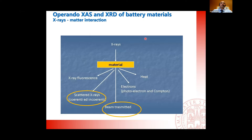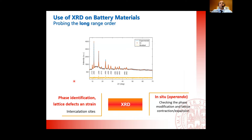This can be done using X-rays. By bombarding X-rays into a material, a series of phenomena appears: production of heat, primary electrons, secondary electrons, Compton electrons, the transmitted beam — with the material absorbing some of the X-ray beam — and X-ray fluorescence, which is also an important analytical technique. Today, I want to focus on two: X-ray absorption spectroscopy, related to the transmitted beam, and X-ray diffraction, which uses the coherently scattered X-rays.